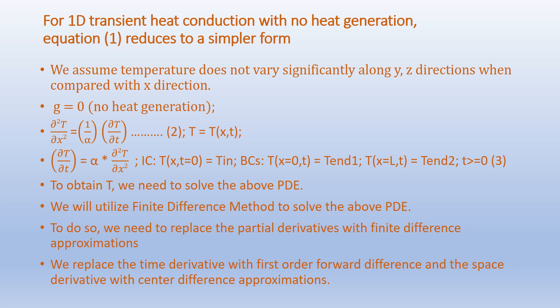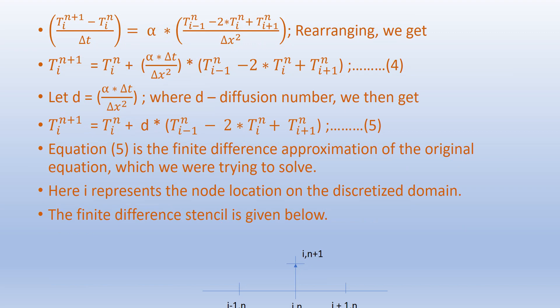We utilize the finite difference method to solve the PDE by replacing the partial derivatives with finite difference approximations. We replace the time derivative with a first-order forward difference and the space derivative with a centered difference approximation. Accordingly we get: (T_i^(n+1) - T_i^n) / Δt = α · (T_(i-1)^n - 2T_i^n + T_(i+1)^n) / Δx².